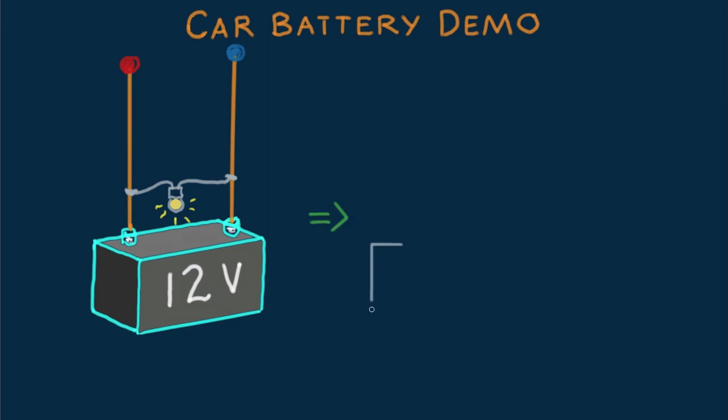We can represent the circuit with a schematic diagram. Here's the symbol for the bulb's resistance and the symbol for the battery. Our bulb resistance is, say, 6 ohms and our battery 12 volts.